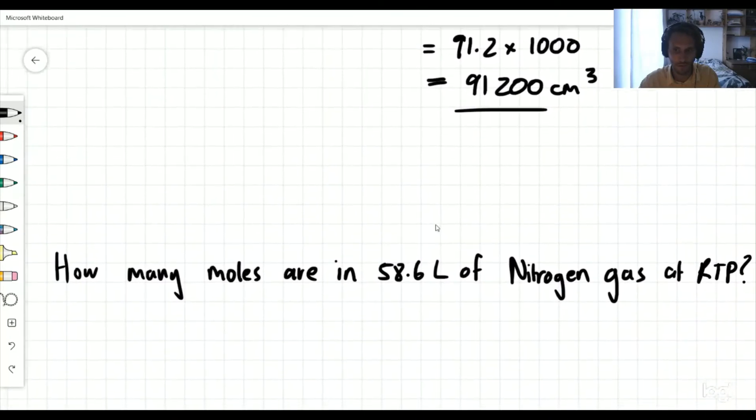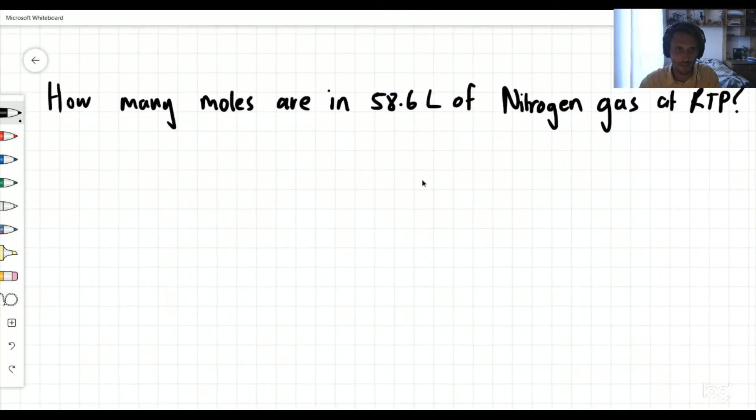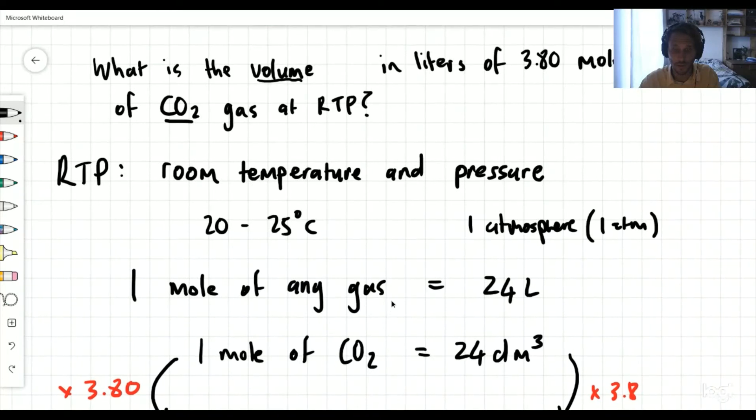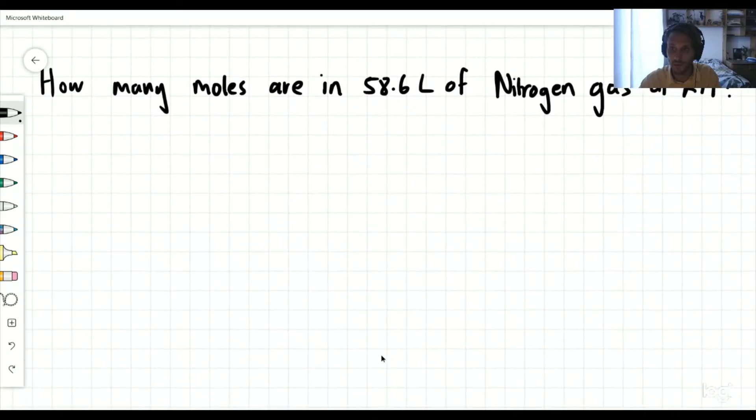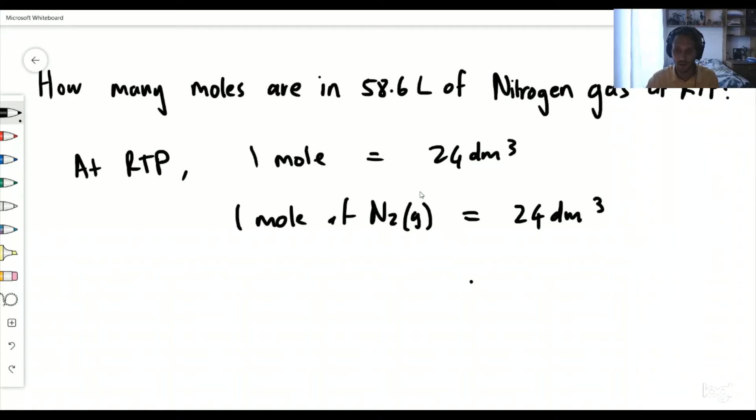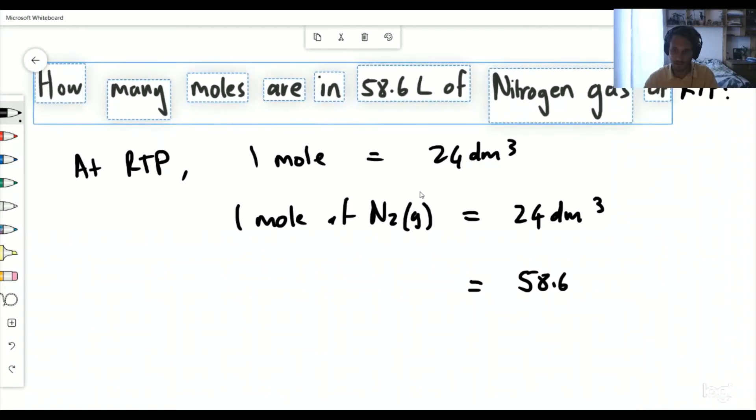Let's go into a new question. What if we switch this around? In the previous question we were asking what is the volume in liters or decimeters cubed. Now we're asking how many moles are in 58.6 liters of nitrogen gas at room temperature and pressure. Remember, one mole of any gas is going to give me 24 decimeters cubed. So now if we have one mole of nitrogen gas N2, that's 24 decimeters cubed.